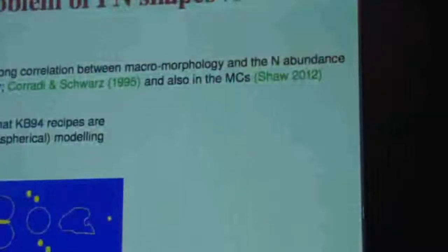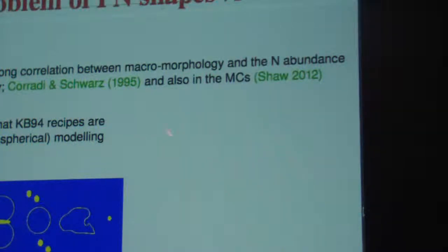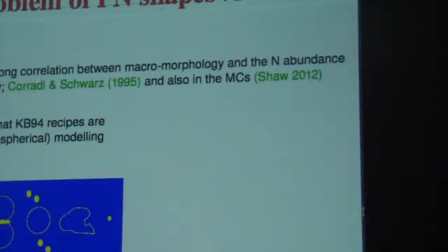So now going to the problem of shapes versus the main way of deriving the abundance. We already know there is a strong correlation between the morphology and the nitrogen abundance of the planetary nebulae — for different morphologies, in the Galaxy as well as the Magellanic Clouds. This is a result from a number of papers reviewed here.